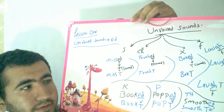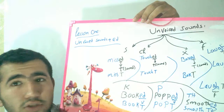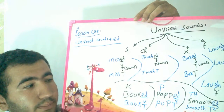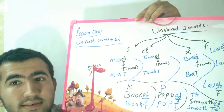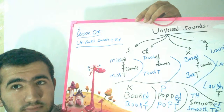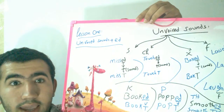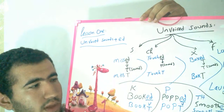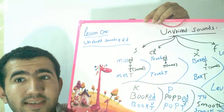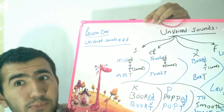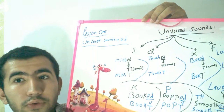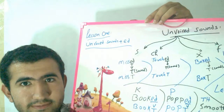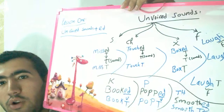Laugh, laughed. And also we have: book, booked. So the ED with the unvoiced sound K turns out to be T. That's very important — look at that carefully.